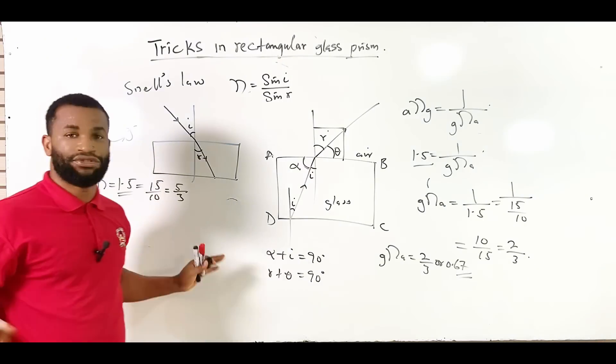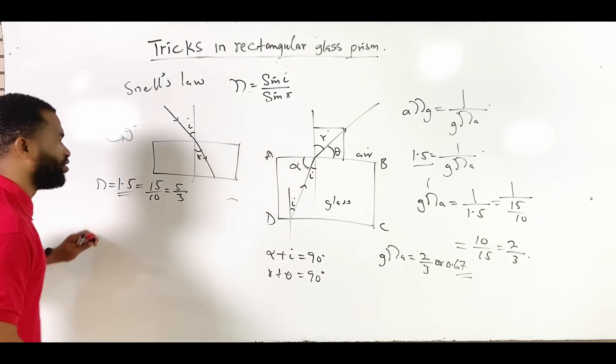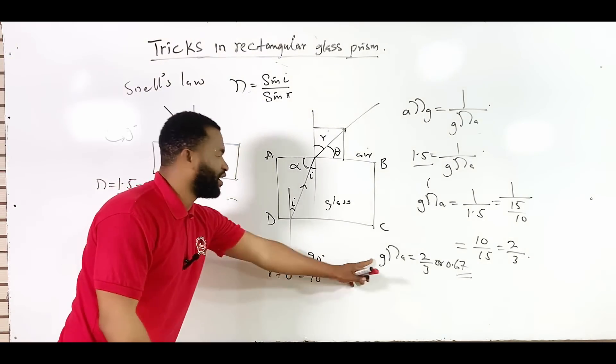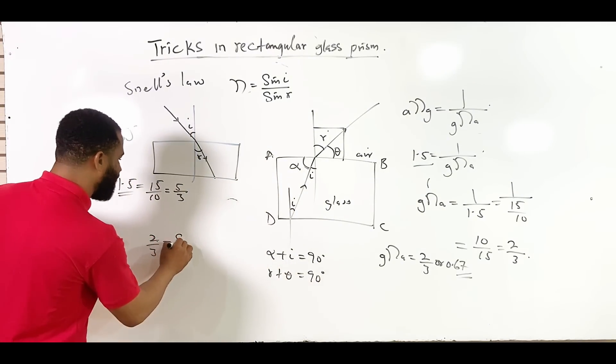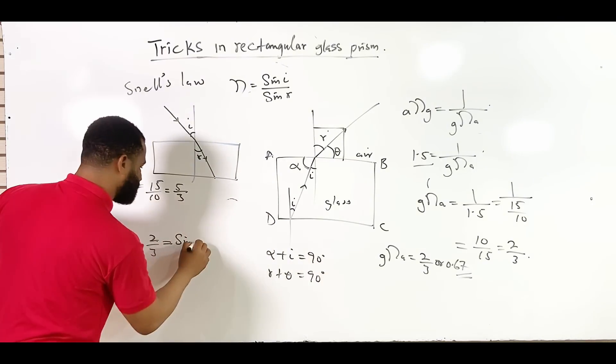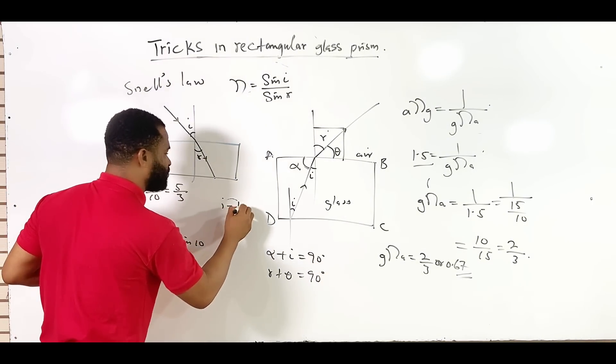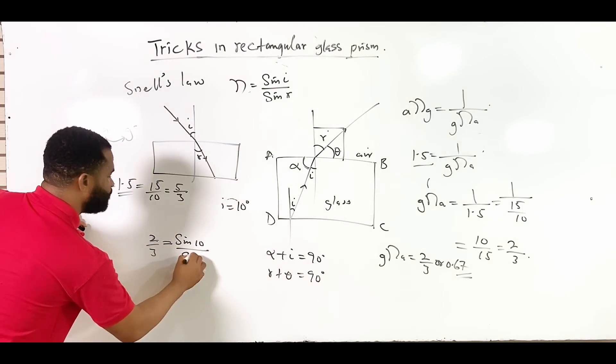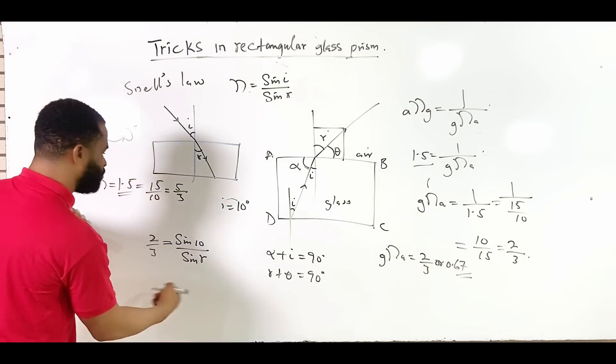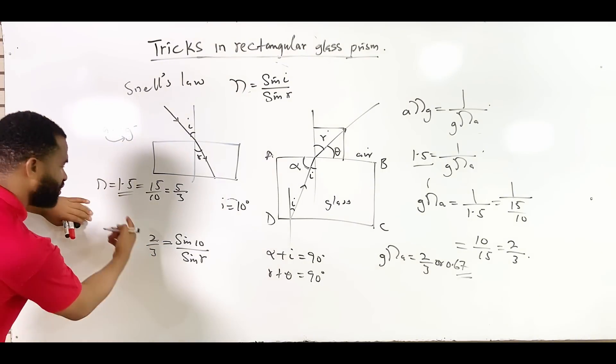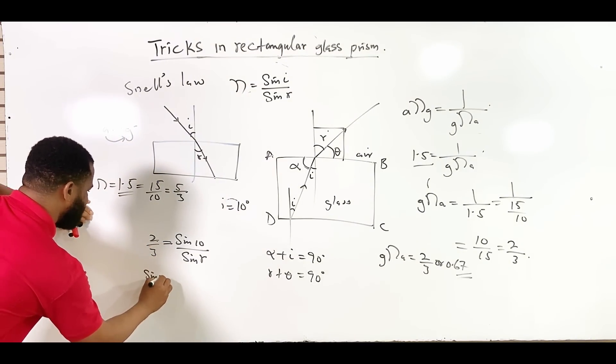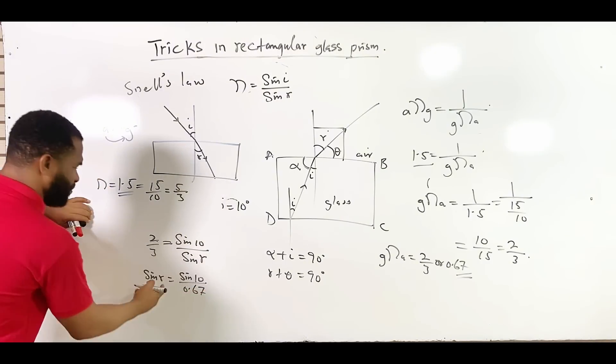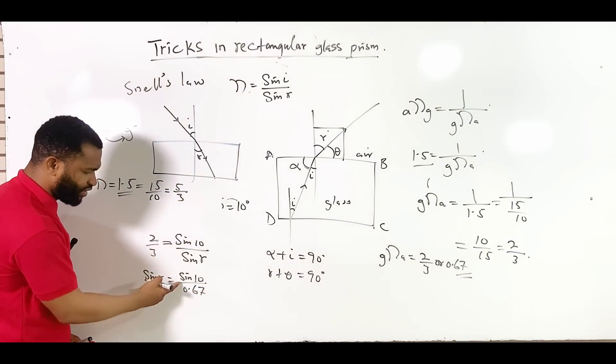How then do you find the refractive angle? With that, you've keyed your experiment. The next thing you are going to say is 2 all over 3, because that is the refractive index, which is equal to sine through the glass, which is 10 degrees. That is, I'm saying that if i is equal to 10 degrees all over sine of the refraction. Then you clear the fraction. Sine r is equal to sine 10 all over 0.67. Remember, I said that 2 over 3 is something like 0.67.